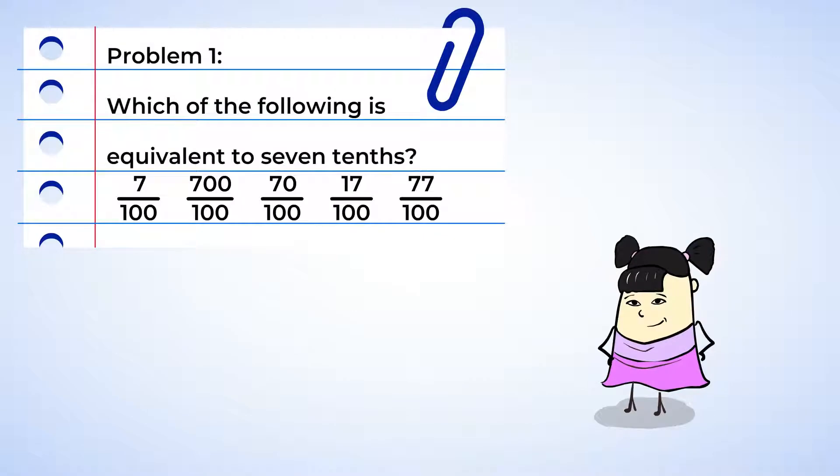Look at these fractions. Now, which of them is equivalent to 7 tenths? Well, looking at the denominators for each answer, they are all 100. And this means our denominator in the original fraction, 7 tenths, will need to be multiplied by 10.